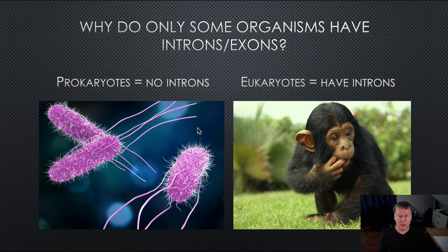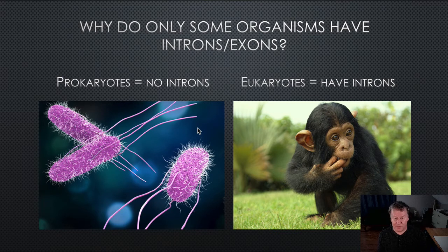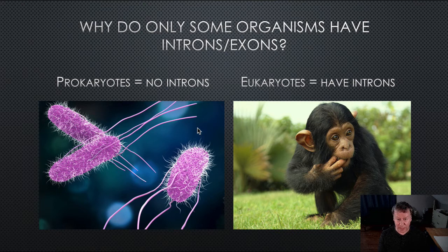But why do only some organisms have introns and exons? If we go and look at the variety of life, we'll find that prokaryotic cells do not contain introns in their DNA. Eukaryotic organisms do contain introns.